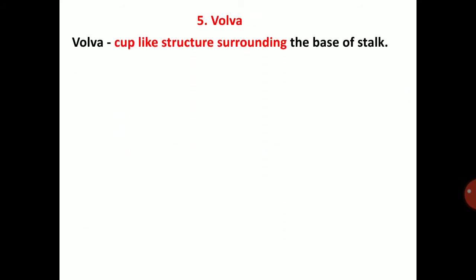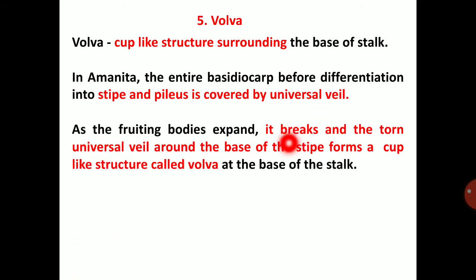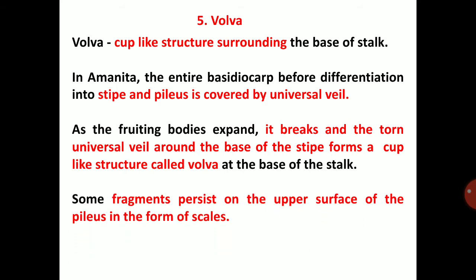The volva is a complex structure surrounding the base of the stipe. In Amanita, the entire basidiocarp before differentiation into stipe and pileus is covered by a universal veil. As the fruiting body expands, the universal veil breaks and remains around the base of the stipe, forming a cup-like structure called the volva. Some fragments persist on the upper surface of the pileus in the form of scales.